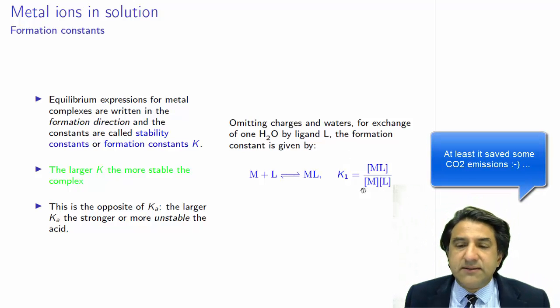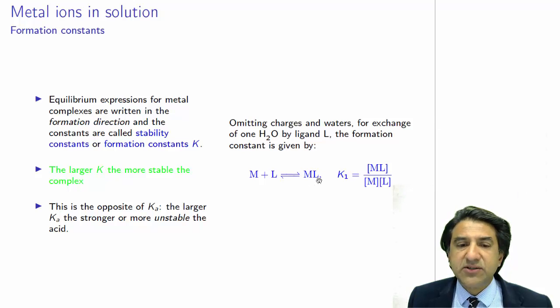The larger the formation constant, the more stable is the metal ligand complex. So it's exactly the opposite of the Ka situation.